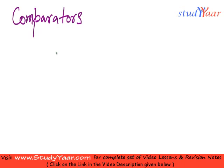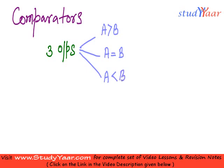My comparator has three outputs. These are either A is greater than B, or A is equal to B, or A is less than B. It takes two numbers as input and has three outputs.